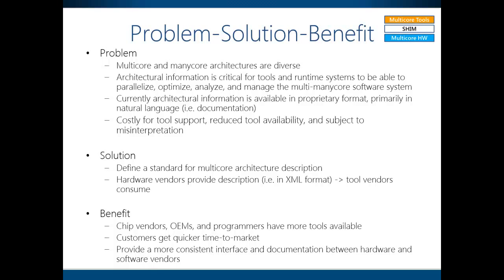So the idea here is to define a standard for multi-core architecture description. In this scheme, hardware vendors provide a description in XML format, and tool vendors will consume the XML files. The benefit is that chip vendors, OEMs, and programmers have more tools available, and the customers get quicker time to market, and it provides a more consistent interface and documentation between hardware and software vendors. As a whole, it accelerates the ecosystem of multi-many-core technology so that everyone in the market can benefit from it.